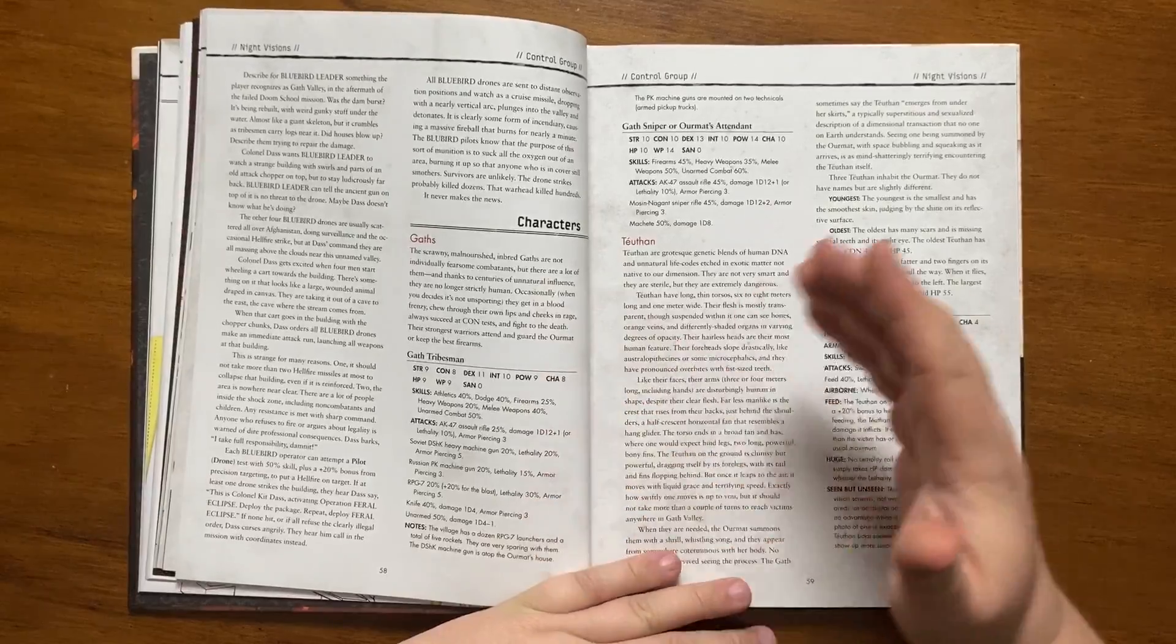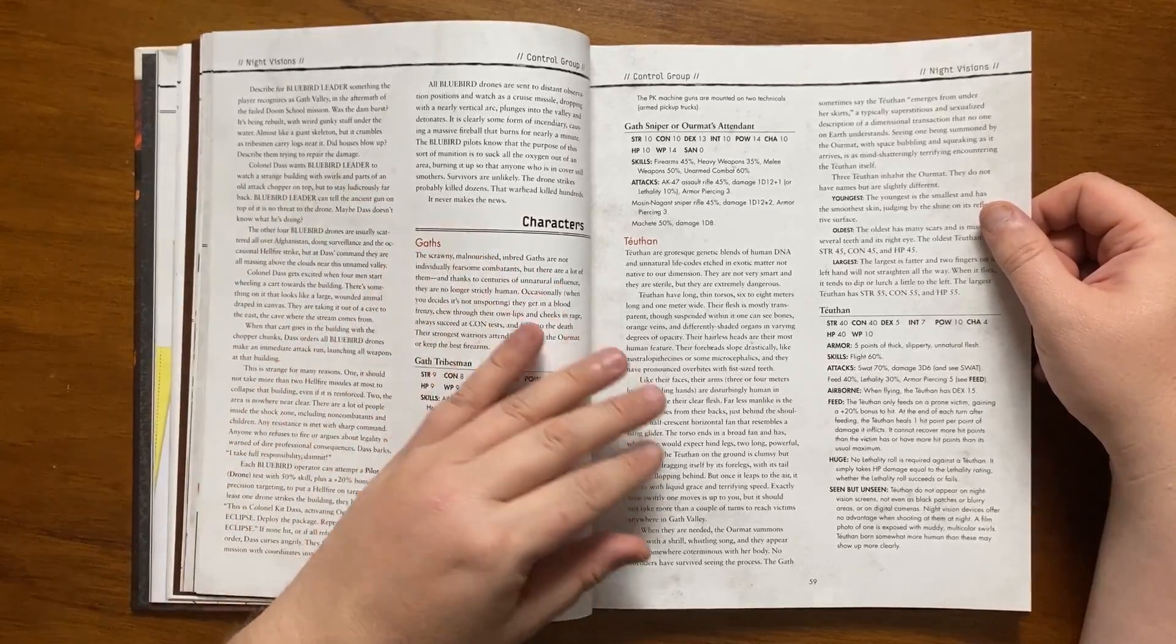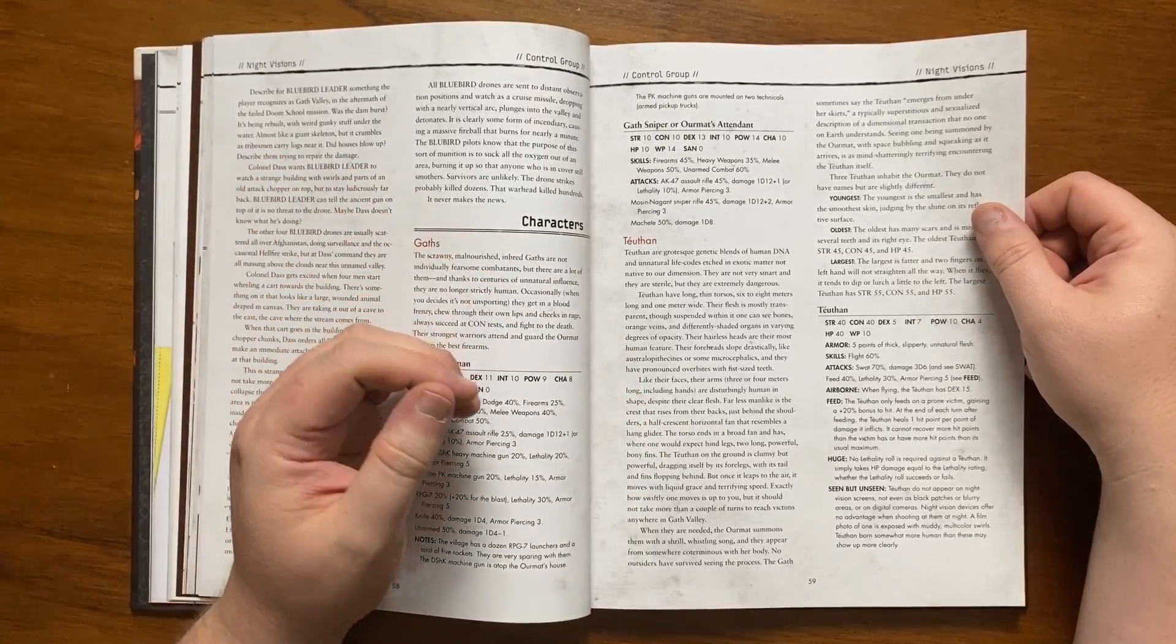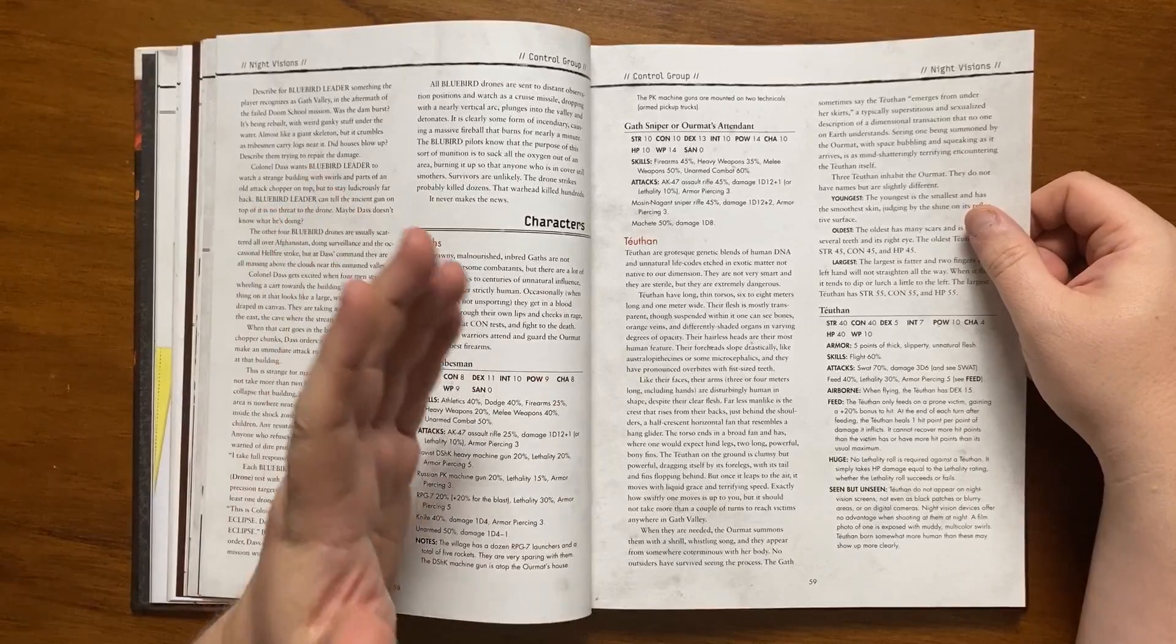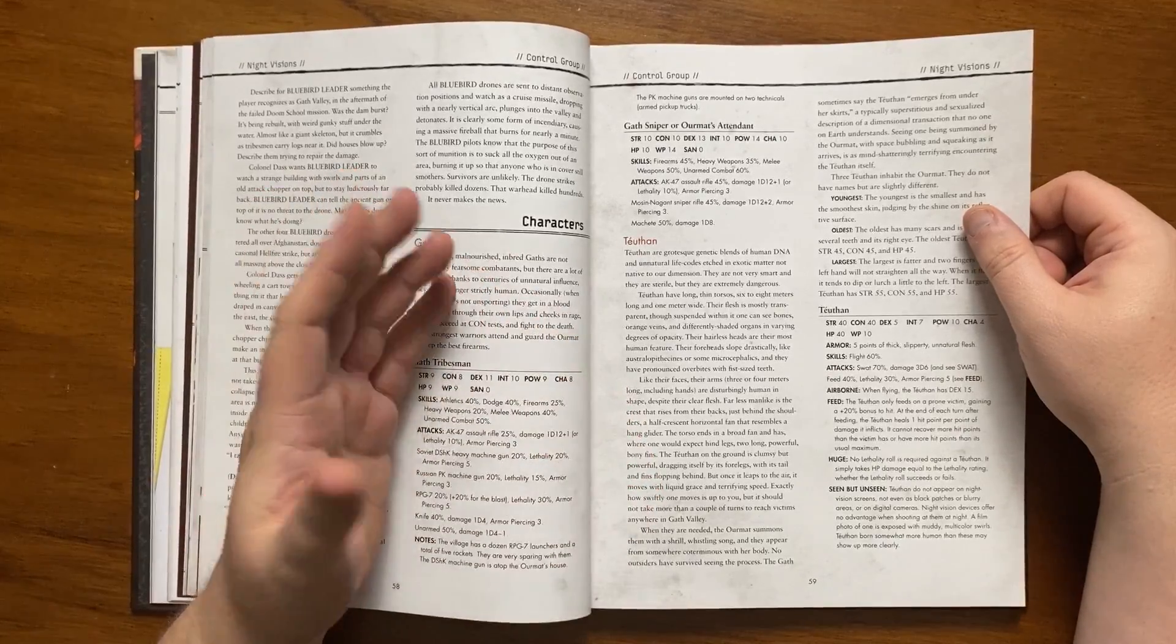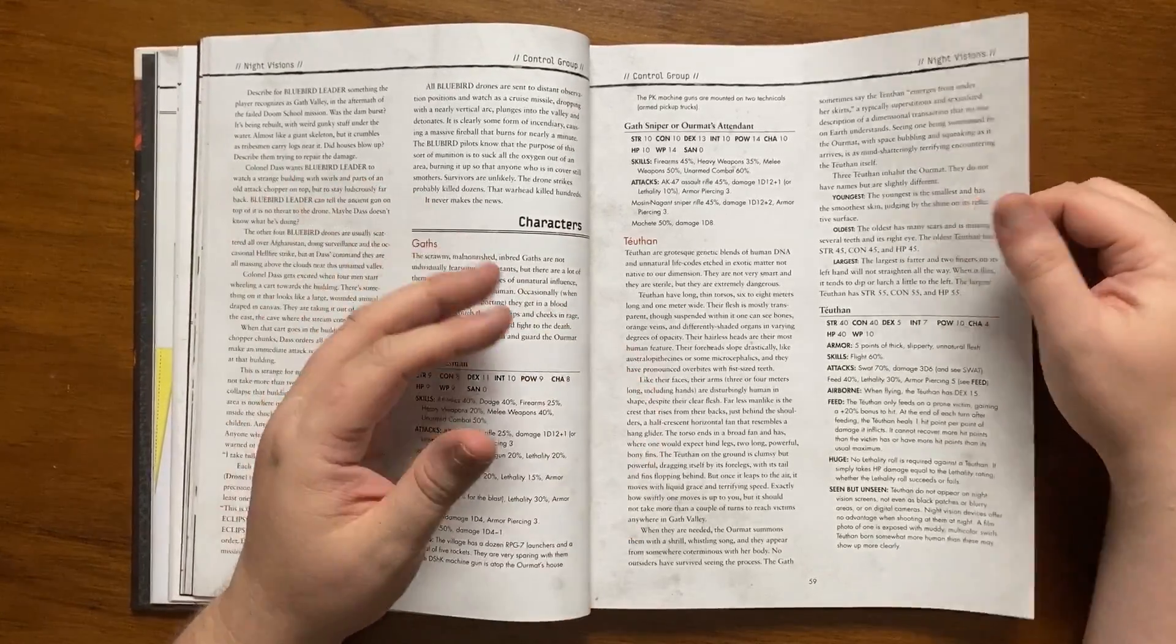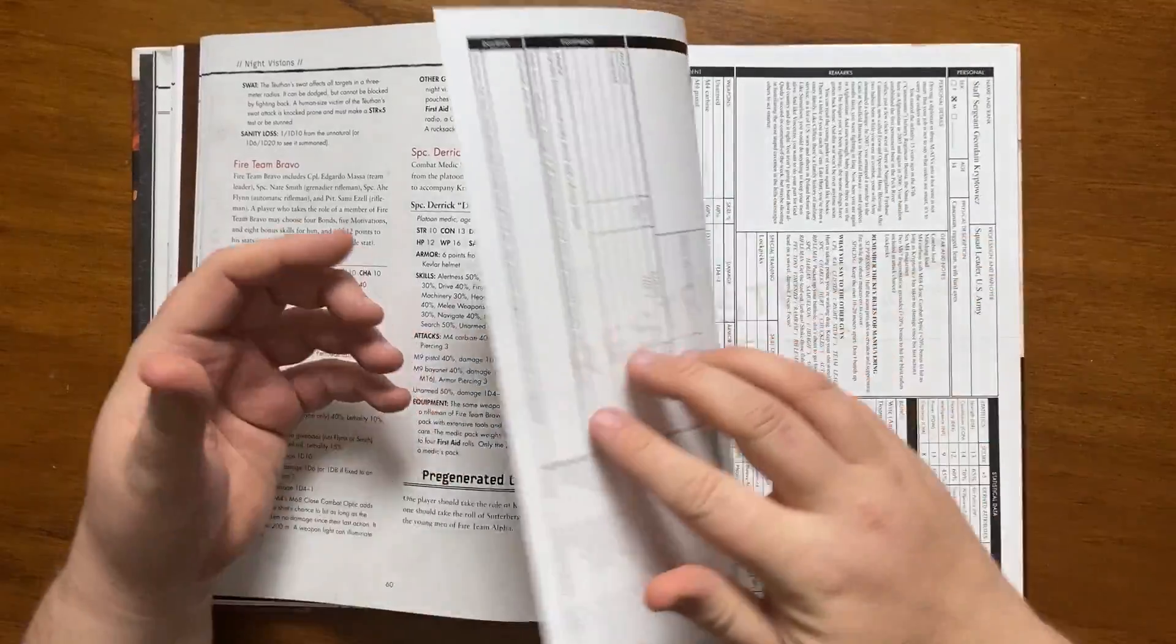After this it gives the stats for the average Gath and then moves on to the Tuathon. They are a genetic blend of human and unnatural. They're fairly stupid and sterile but extremely dangerous. They have long thin torsos between 6 to 8 meters long and long sloping faces with pronounced overbite and massive teeth. They have long thin limbs with clear flesh and from behind their shoulders they have a horizontal fan that resembles a hand glider. They also have no legs and their torso has two long bony fins. They glide through the air smoothly and are summoned by the Ormat with a shrill whistling song emerging from the air around her. Seeing them summoned is a terrifying encounter. Three inhabit the Ormat. They are deadly in combat and are invisible on Night Vision. After this it gives the stats for Bravo Team, the Medical Specialist and Yasir Marwat the Translator and also the loads that the soldiers should be carrying. This is followed by the pre-gens.